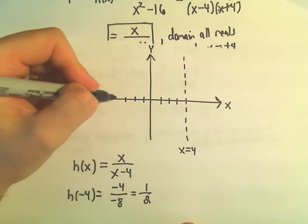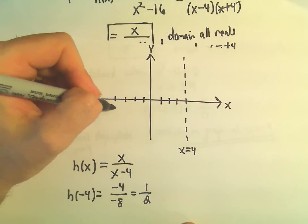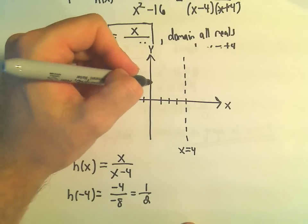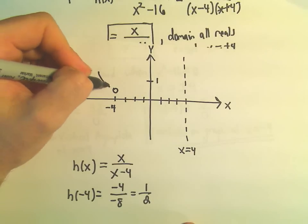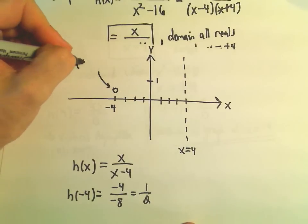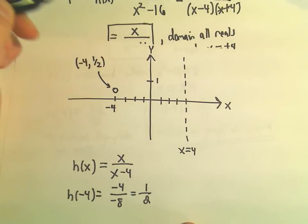So 1, 2, 3, 4. So at negative 4, it says we're going to be, so there's positive 1. It says there's going to be a hole at the point 1 half. So negative 4 comma 1 half.